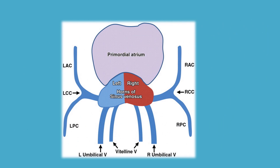The formation of the bulboventricular loop brings the sinus venosus on the dorsal caudal side of the primitive atrium. This you can understand if you see the previous video, development of heart part 1. The sinus venosus grows in a transverse direction and presents right and left horns. Each horn has a body wall, a roof, and a floor.